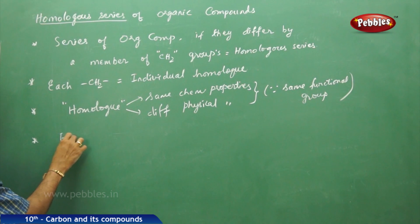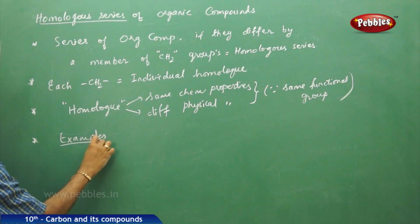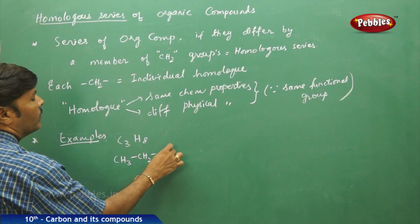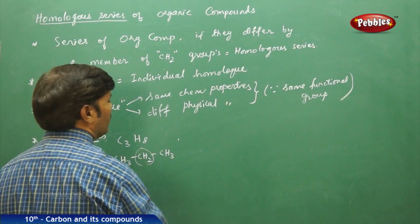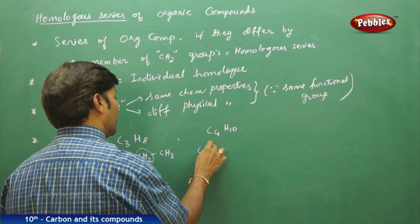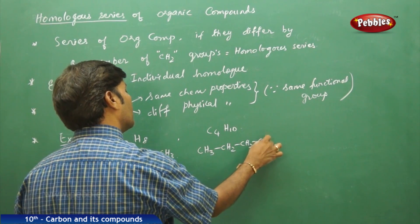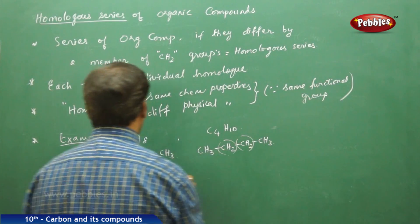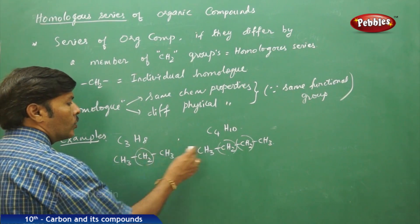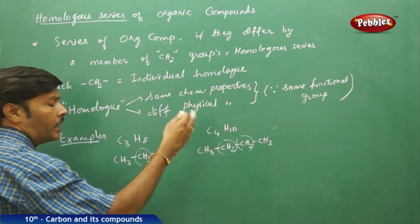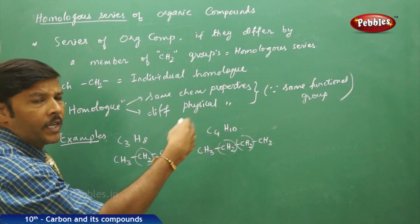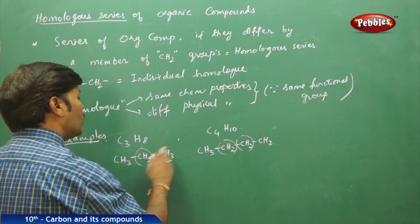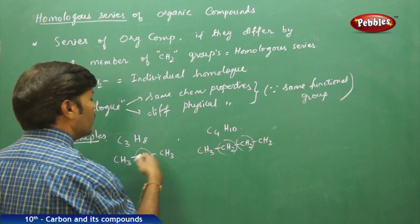For example, you can take CH₃CH₃ and CH₂CH₃. You are finding one homolog and two homologs. Both of them are differing by a member of a CH₂ group — here you have one CH₂ group, here you have two CH₂ groups. The number of carbons increases, and the CH₂ group also increases, so these are different organic compounds differing by a CH₂ group.